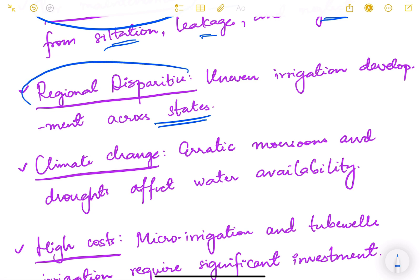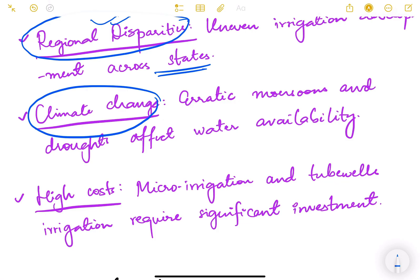Climate change is a very big problem. Erratic monsoons and droughts affect water availability.